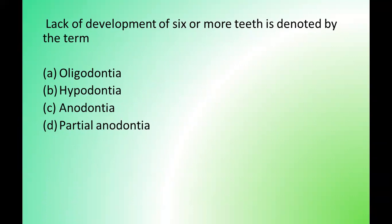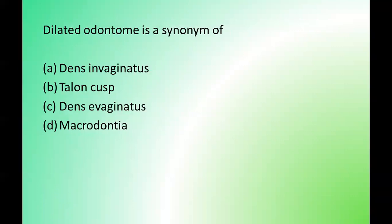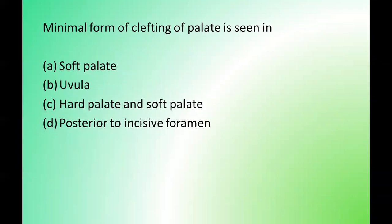Next question: lack of development of six or more teeth is denoted by which term? Options are: oligodontia, hypodontia, anodontia, partial anodontia. The correct answer is option A — oligodontia. Next question: dilated odontome is also known as which of the following? Options are: dens invaginatus, talon cusp, dens evaginatus, macrodontia. The correct answer is option A — dens invaginatus.